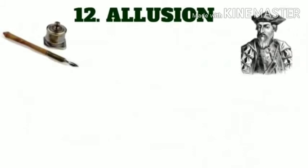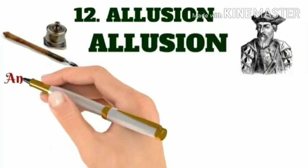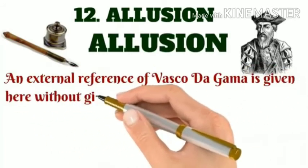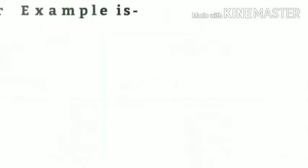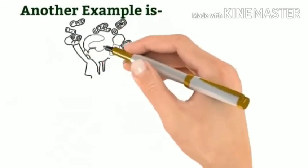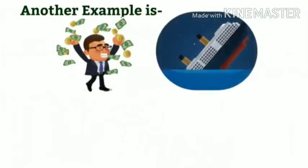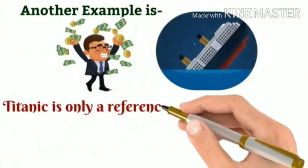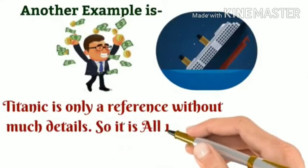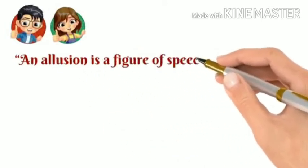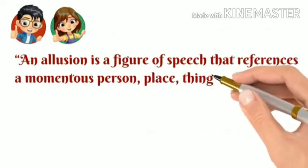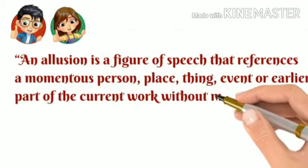Allusion. 'Your pen is quite old — it seems to be the pen of Vasco de Gama.' It is allusion because an external reference to Vasco de Gama is given without providing much detail about him, and the speaker expects the listeners to understand it. Another example: 'When your parents learn about your new plan to raise money, it's going to sink like the Titanic.' Titanic is only a reference without much detail — so it is allusion. An allusion is a figure of speech that references a momentous person, place, thing, event, or an earlier part of the current work without much detail.